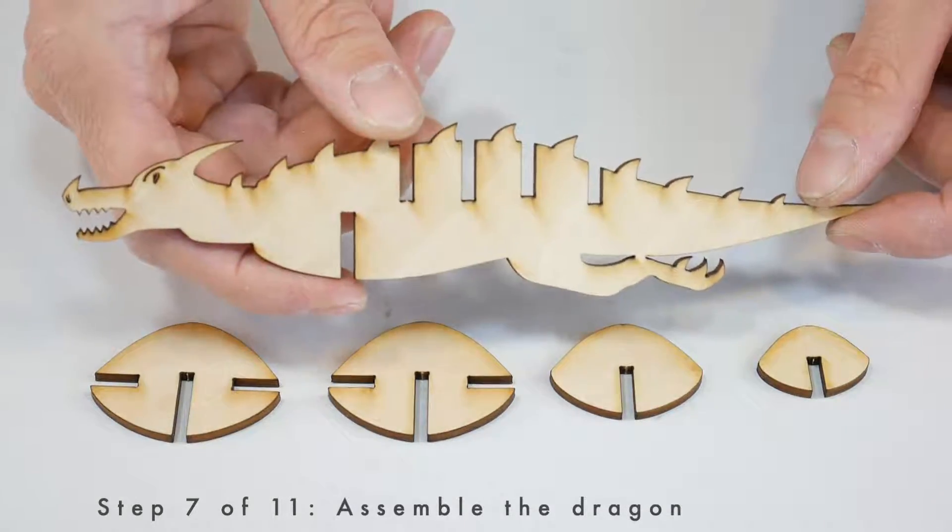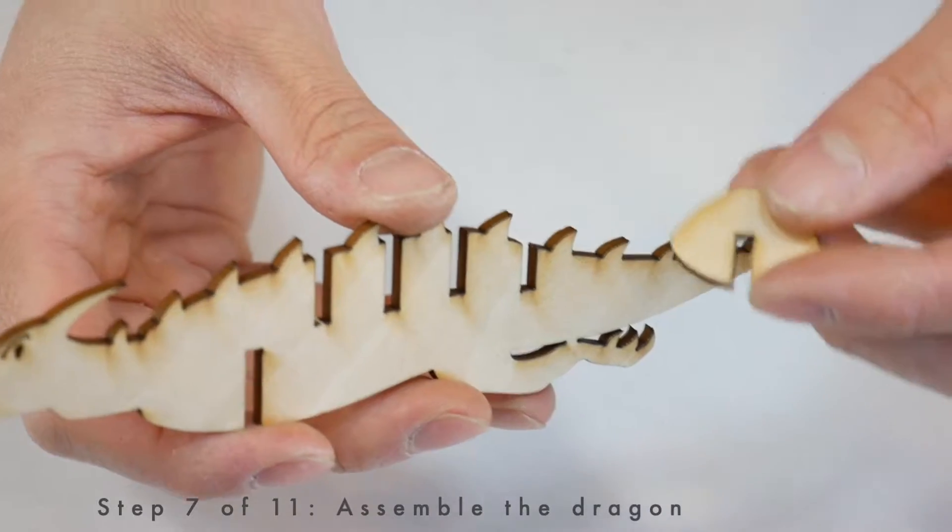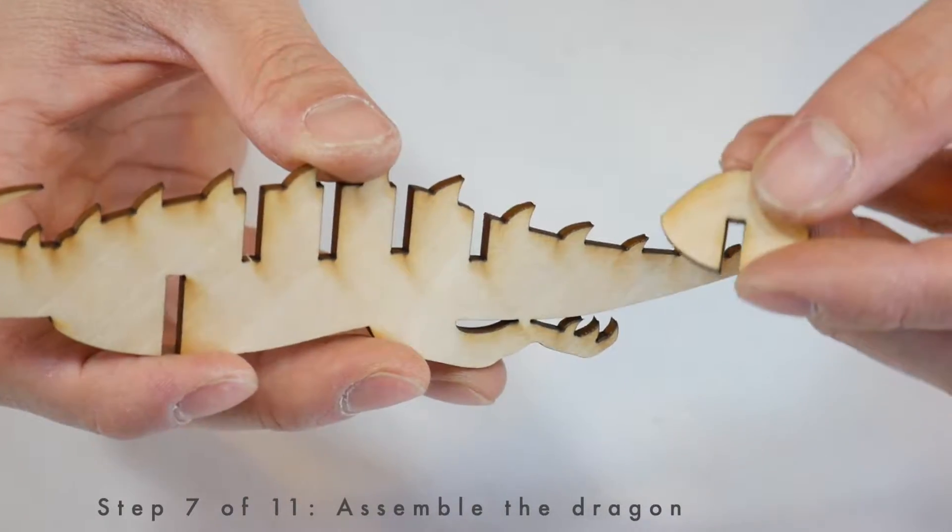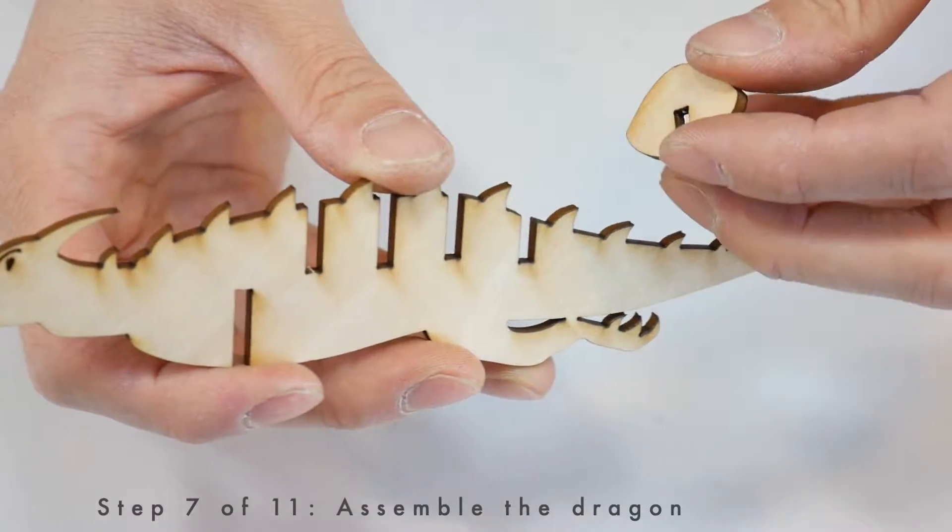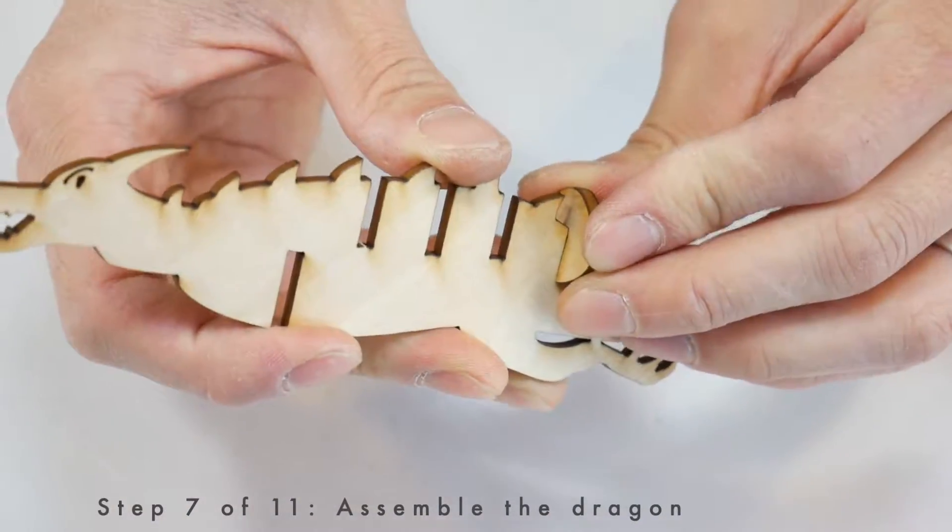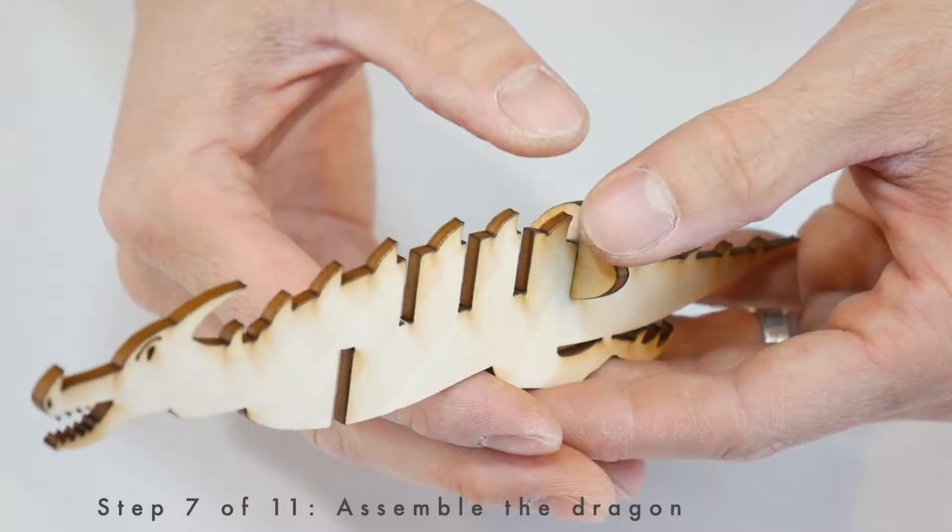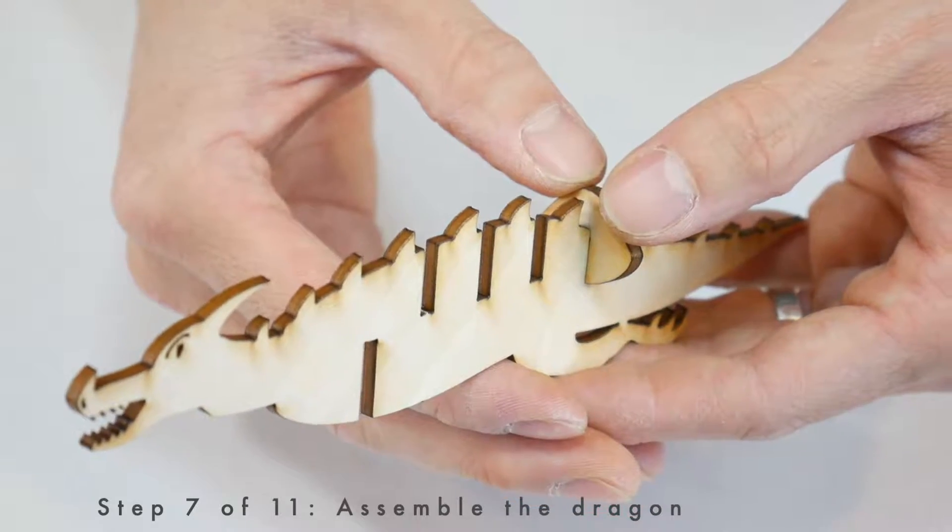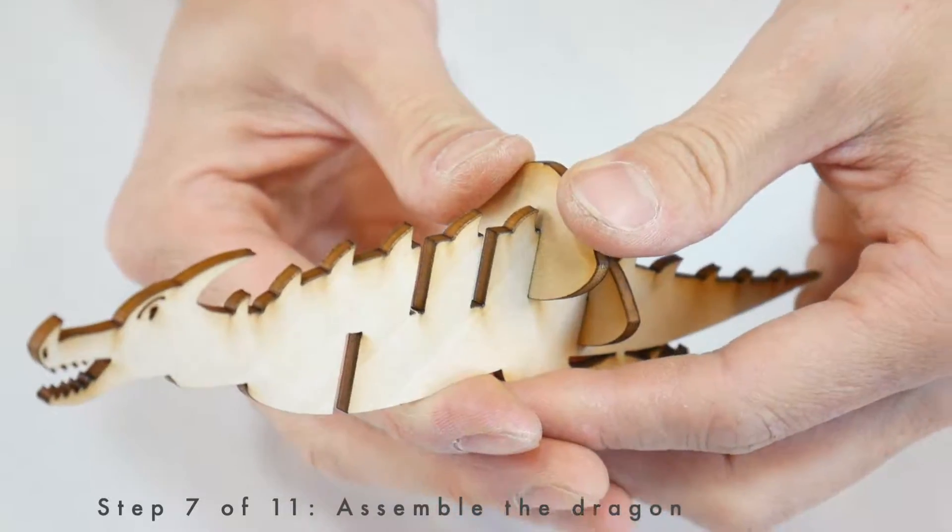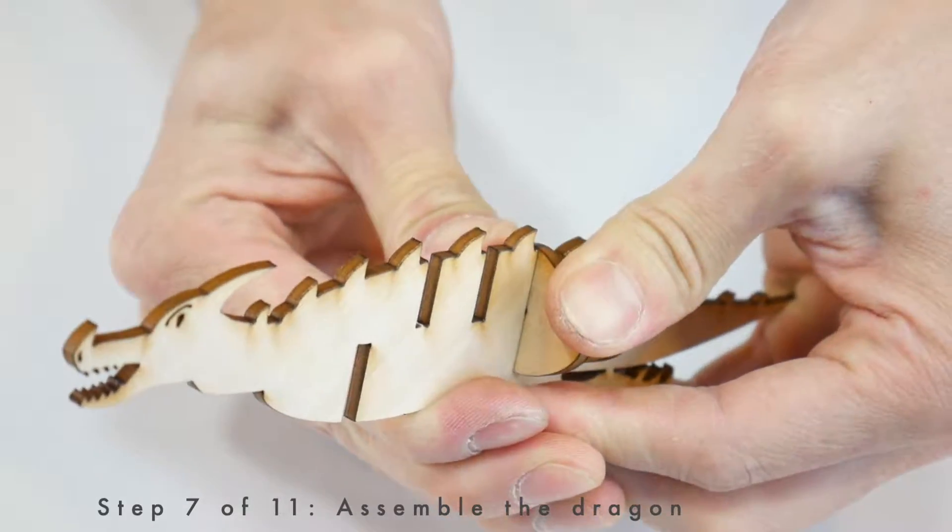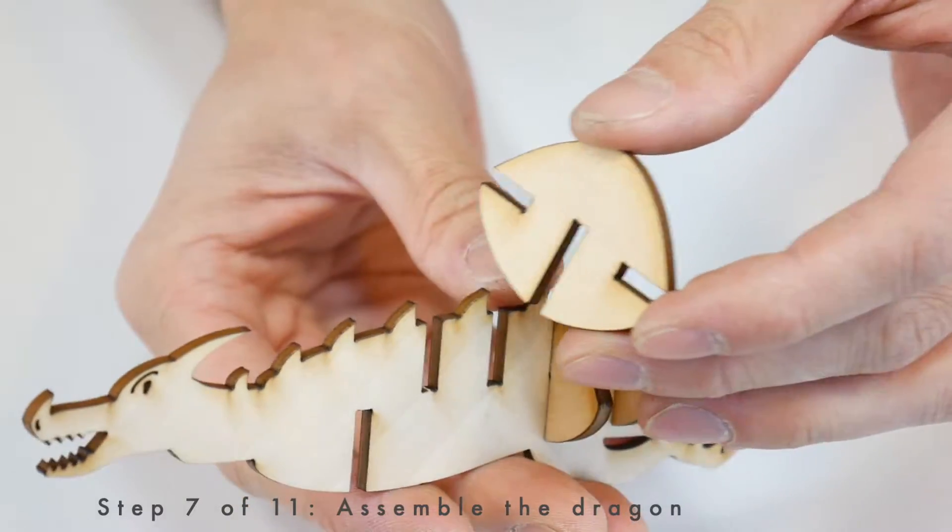Now we're going to assemble the dragon and the first step is to attach these pieces. Start with the smallest piece and this is going to get inserted into the slot that's nearest to the tail of the dragon. The easiest way to do this is to first just get it in position. Then use both hands to grasp the dragon body with your thumbs on top of the small piece and then squeeze everything until it gets pushed all the way down. Repeat with the next largest piece and then again with these two identical pieces that have slots on the sides.